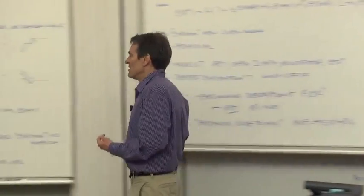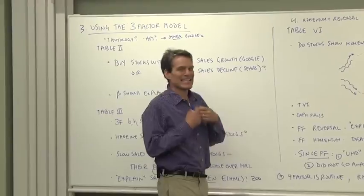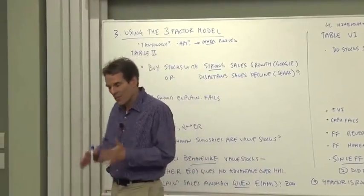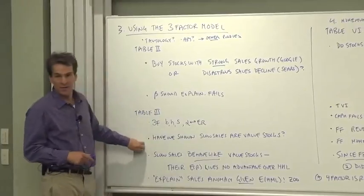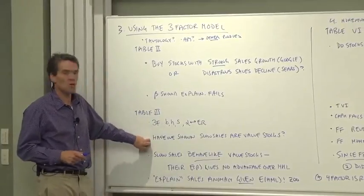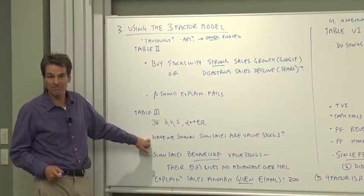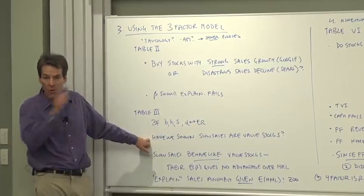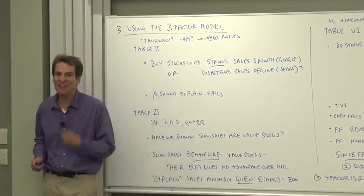So look at what we've done. We've used the Fama and French model to understand a different anomaly, an anomaly that by itself had nothing to do with size and book-to-market. Have we shown in this table that the slow sales companies are themselves value stocks? No.